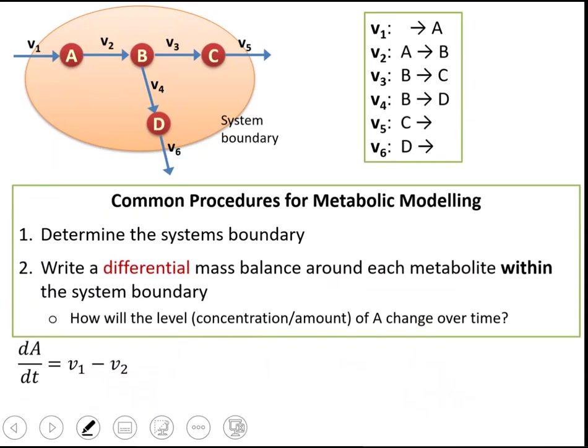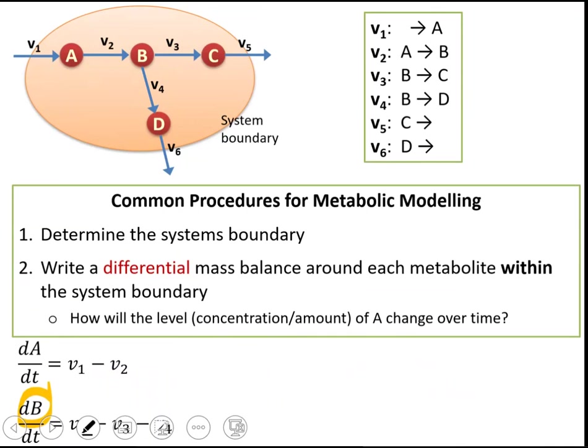We write this differential mass balance around each metabolite within the system boundary. We already wrote it for metabolite A. Now we will write it for metabolites B, C, and D. Here you see the metabolite B balance — how the amount of B will change over time. The amount of B increases with V2 and decreases with V3 and V4, so we write it as: plus V2, minus V3, and minus V4.